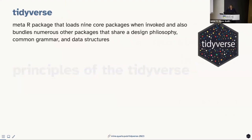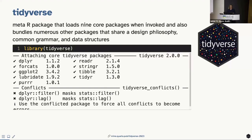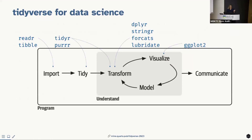The tidyverse itself is a meta R package that loads nine core packages when invoked. What's special about these packages is that they share a design philosophy, a common grammar, and data structures. When we think about the data science cycle from R for Data Science, many of these packages map on to many of the steps of that cycle.